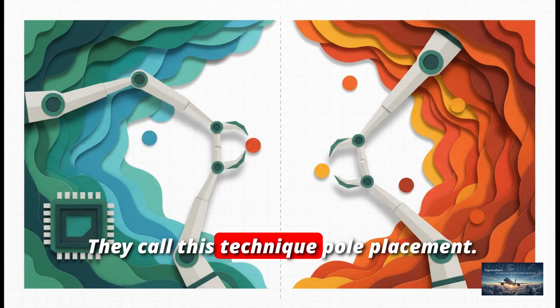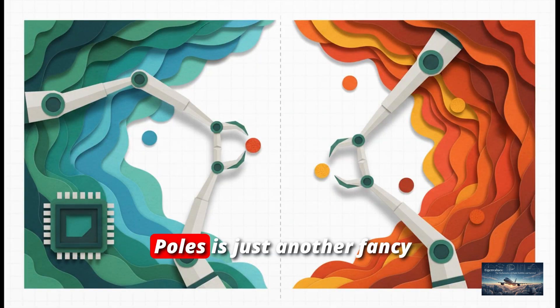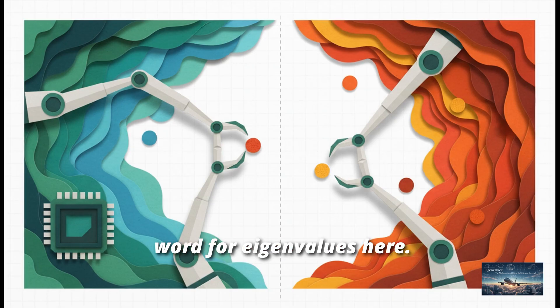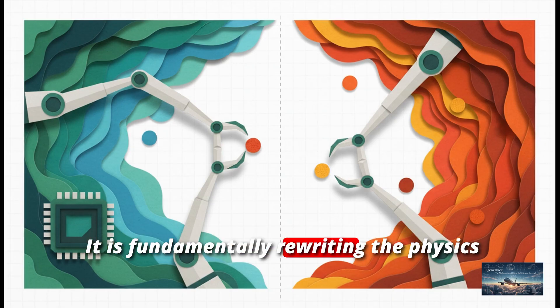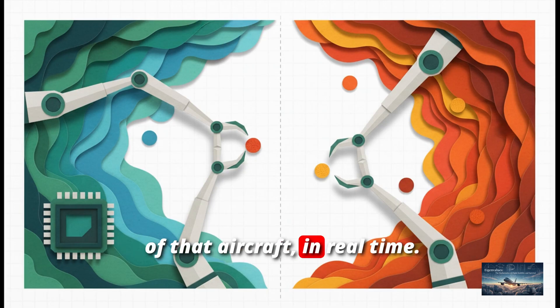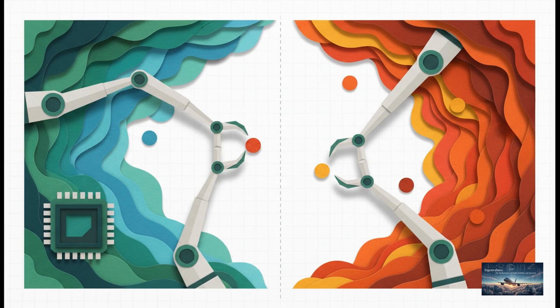They call this technique pole placement. Poles is just another fancy word for eigenvalues here. The computer isn't just helping the pilot out. It is fundamentally rewriting the physics of that aircraft, in real time. It's literally grabbing the plane's destiny from the dangerous, positive side of the chart, and dragging it over to the safe, negative side.